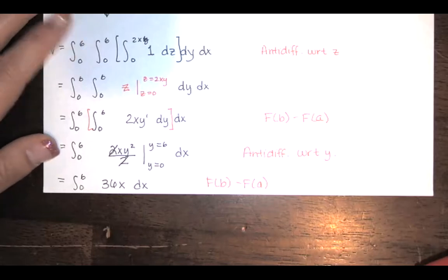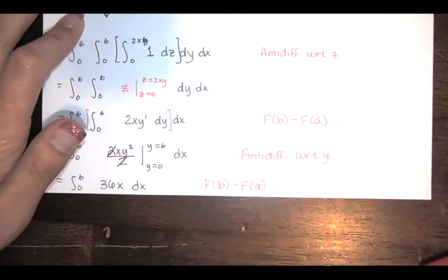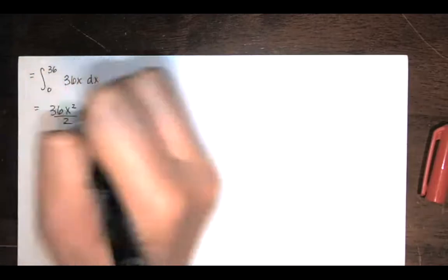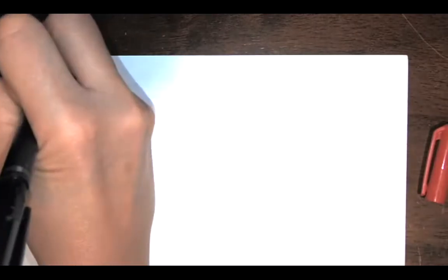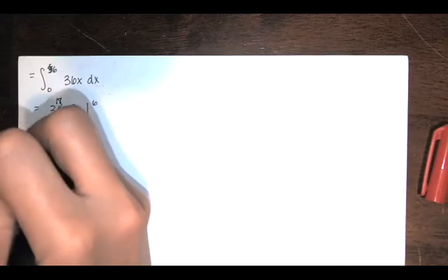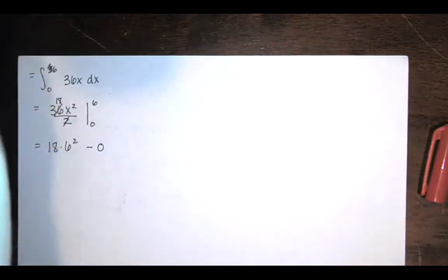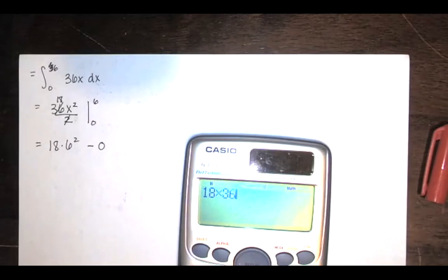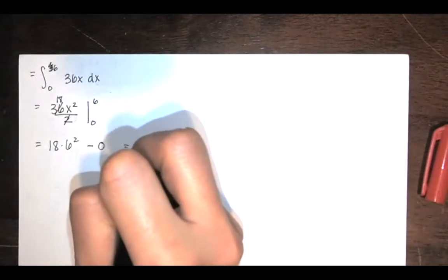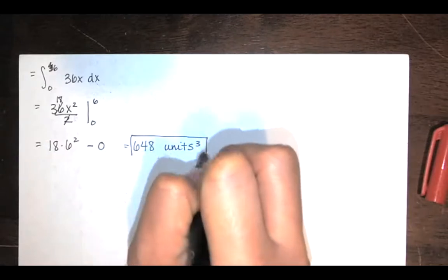And then we keep going. This is just a calc 1 integral. It's a pretty simple calc 1 integral. So we evaluate that. We'll just use the power rule, bring the 36 down, add 1 to the exponent, divide by the new exponent. Evaluate from x equals 0 to x equals 6. 2 goes into 36 eighteen times. So we have 18 times 6 squared minus 0. And that's our answer. And so I get 648. That was a volume. So that'll be units cubed.